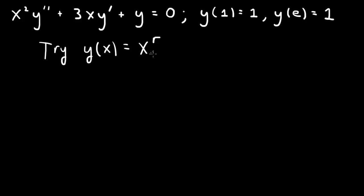So when we substitute y of x equals x to the r into this equation, the x to the r term will cancel, and we'll end up with the second derivative will give us an r, r minus 1, plus 3, the first derivative will give us an r, plus 3r, plus y, which will give us a 1, equals 0.